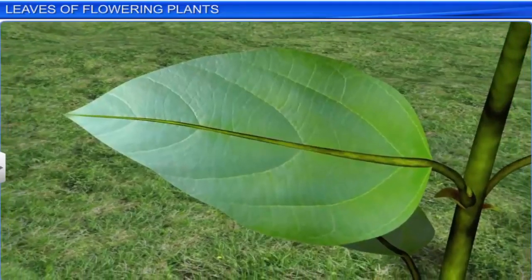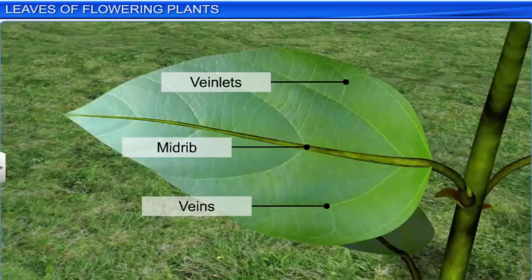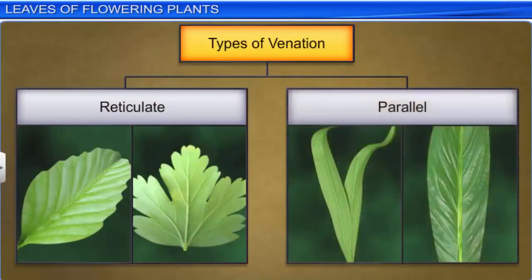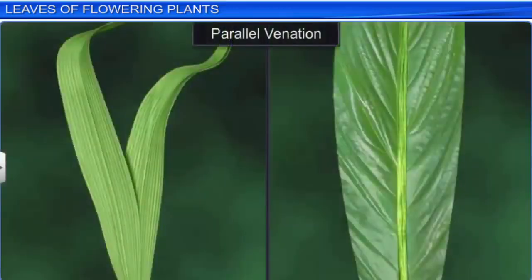The lamina also has many veins and veinlets running through it. Usually the lamina has a prominent vein running through its center called the midrib. The arrangement of veins and veinlets in a leaf blade or lamina is called venation. Venation is of two types: reticulate and parallel. In reticulate venation, the veins within the lamina form a network, a characteristic common to dicotyledonous plants. In parallel venation, the veins run parallel to each other, typical of monocotyledonous plants.